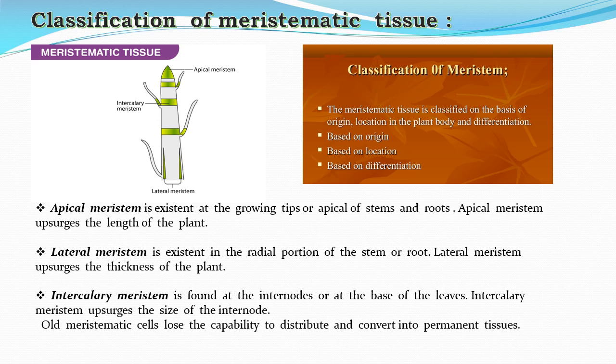Lateral meristems are found around the radial portion of the stem and the roots. They are responsible for adding girth — that is, the thickness — of the plant.